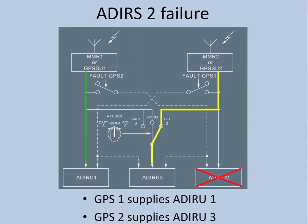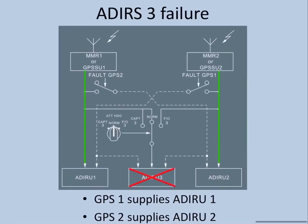If ADIRU 3 fails, there's not much of a change. The normal flow is maintained: GPS 1 will supply to ADIRU 1 and GPS 2 will supply to ADIRU 2. So these are the types of failures possible in the GPS system.